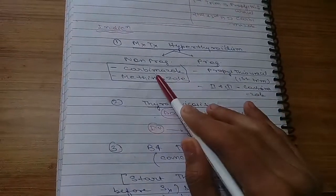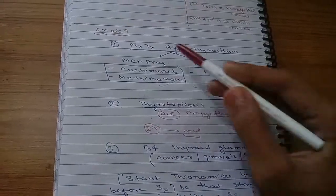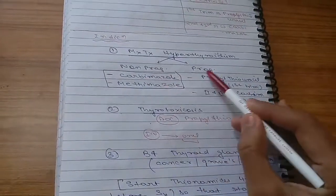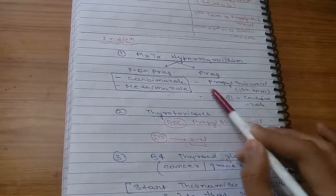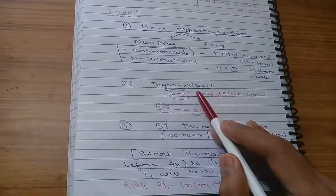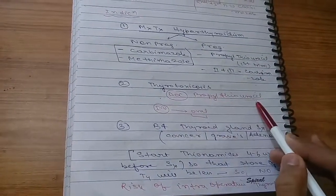For pregnant, you should use propylthiouracil for first trimester and carbimazole for second and third trimester.